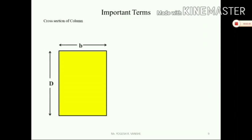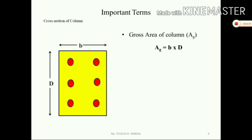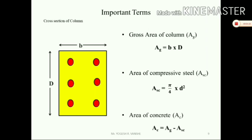For design and analysis, some important notations: the cross-section has dimensions small b and capital D. The gross cross-sectional area A_g = b × D (out-to-out dimension). The area of longitudinal steel A_sc = (π/4) × d² × number of bars, where d is the bar diameter. The area of concrete A_c = A_g − A_sc (gross area minus steel area).